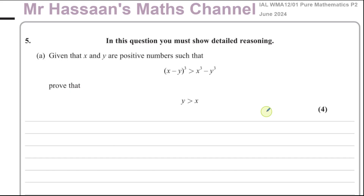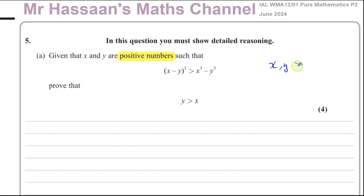This question is a proof question. It says — and note that detailed reasoning is required in bold type — given that x and y are positive numbers, such that x minus y cubed is greater than x cubed minus y cubed, prove that y is greater than x. The first thing we need to note is that x and y are both positive, so they're both greater than 0.